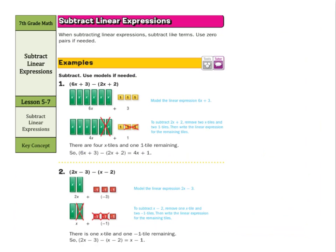Now, to subtract linear expressions, we're going to still subtract like terms, and we have that note about using zero pairs. And what we can see in the model here, we have 6x plus 3 in the first part here, and subtracting 2x plus 2. Well, we're subtracting 2x, and we're subtracting a positive 2, and we're left with 4x plus 1.